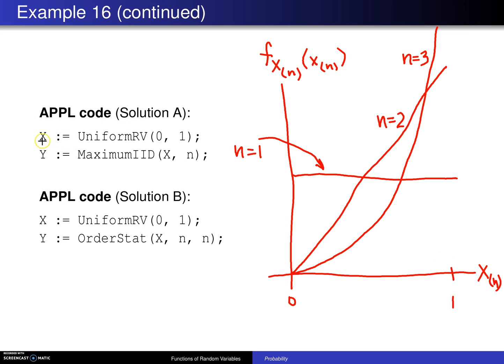In APPL, there are two solutions. Set x to a uniform 0, 1 random variable. y can be found by using the maximum iid function. Likewise, here is a second solution in APPL. x is a uniform random variable between 0 and 1, and you can use the order statistic function, where the first argument gives you the population distribution. The second observation tells you the number of samples that are taken, in this case n, and the third argument tells you the order statistic of interest, which in this case is the nth or the largest.